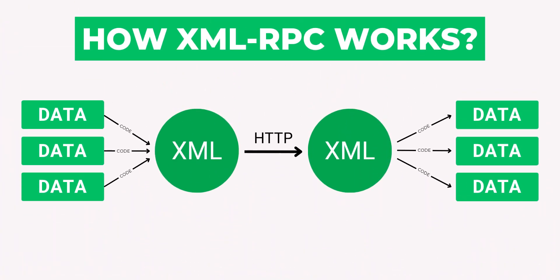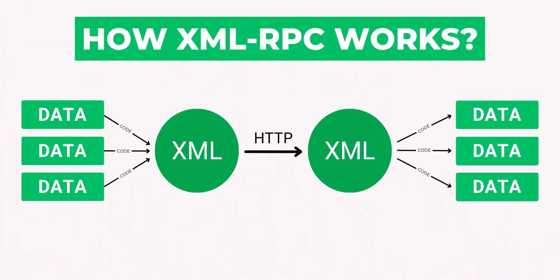XML RPC is a WordPress mechanism that sends data through HTTP — it is not using HTTPS, so it is not using any secure connection. That's why it comes with a security threat.